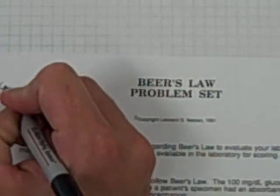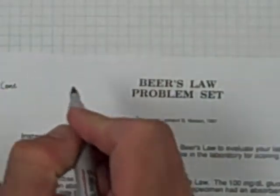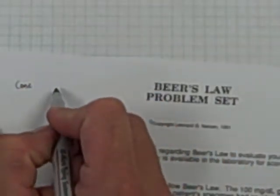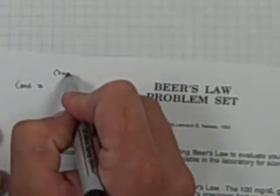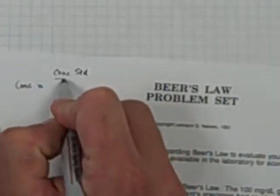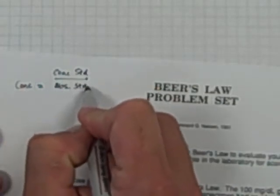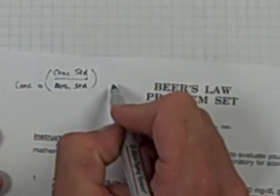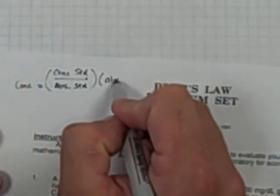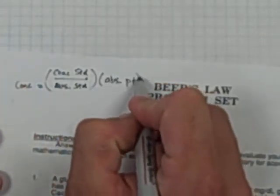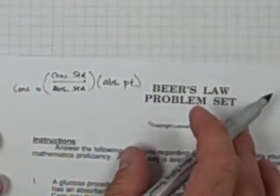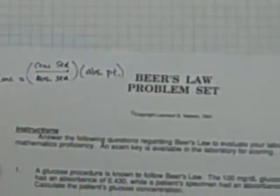So remember the simple equation that we're using for most of these is, I'll write it up here for you. Concentration, usually of the sample that I'm dealing with, is equal to the concentration of my standard over the absorbance of my standard multiplied by the absorbance of my patient or my unknown. So that's going to be the equation that we're going to use for most of these problems.